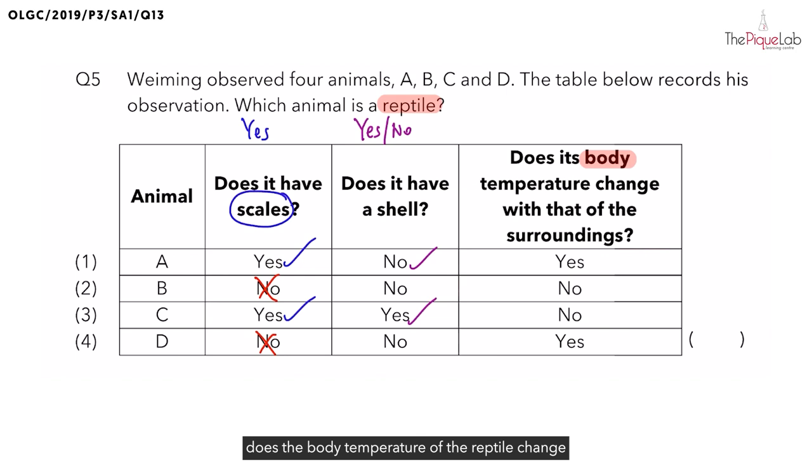Lastly, let's take a look at the final question. Now they ask does the body temperature of the reptile change with that of the surroundings? Now some of you might be wondering what does this actually mean. I want you to think about this: we as humans, we are mammals. And mammals, are we warm-blooded or cold-blooded? We are warm-blooded. Now since we are warm-blooded, when we go into a winter country, we know that the winter country is very cold. But if you were to take your temperature in that winter country, do you think your body temperature will change? No. In fact, your body temperature will remain the same. So that's what it means to be warm-blooded. When you are warm-blooded, it means your body temperature will not change.